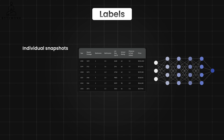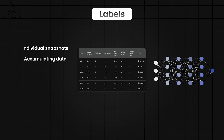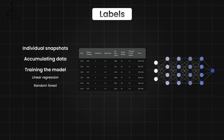Let's take a house sold in March 2023. We gather all its characteristics and neighborhood features — this is our data. Its recorded selling price becomes our label. We repeat this for hundreds, ideally thousands of houses sold across various neighborhoods and time periods. We feed these data-label pairs into a supervised learning algorithm, perhaps a linear regression or a more sophisticated model like a random forest, which I will talk about in detail in the next video. Basically, it starts identifying patterns — maybe houses with more bedrooms in areas with good schools tend to command higher prices.